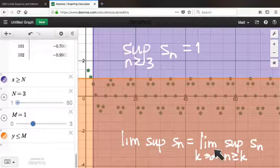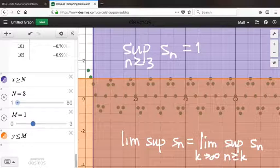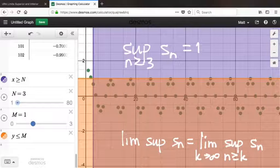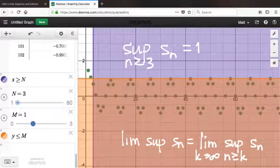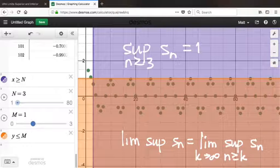Because it's defined in terms of a limit, because there is a convergent sequence, namely the sequence of the suprema of the tails in play here, then there should be a way of defining lim sup that looks a lot like the way that we define limit of a sequence.